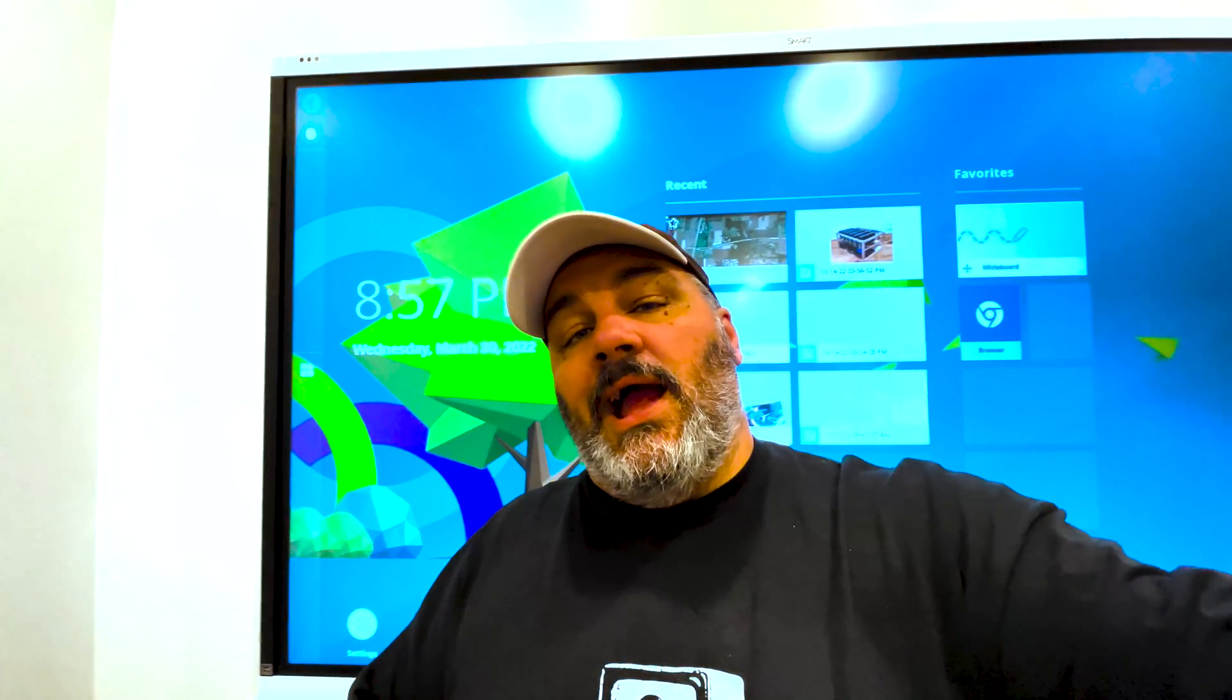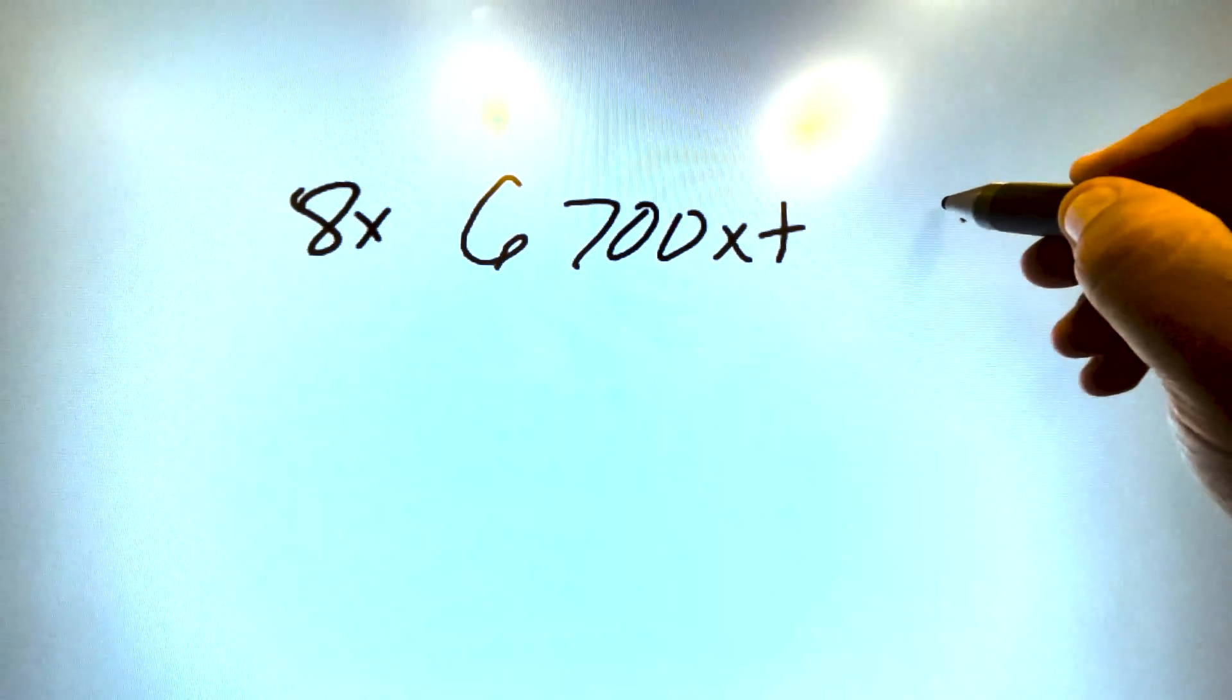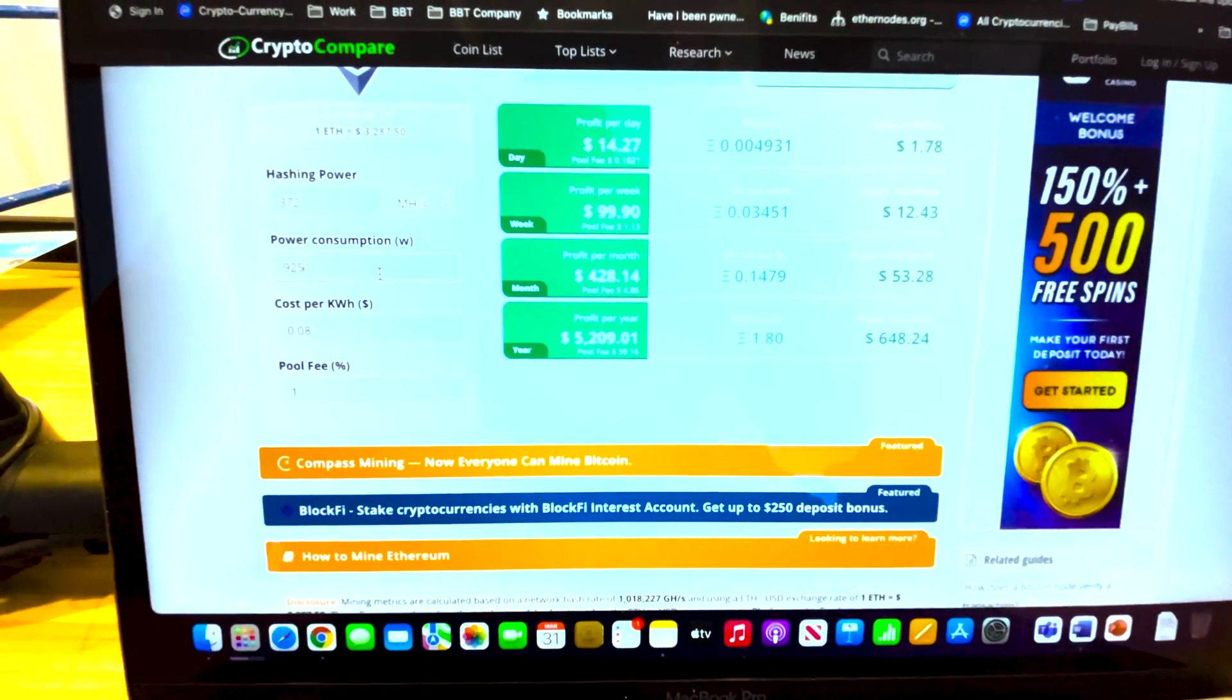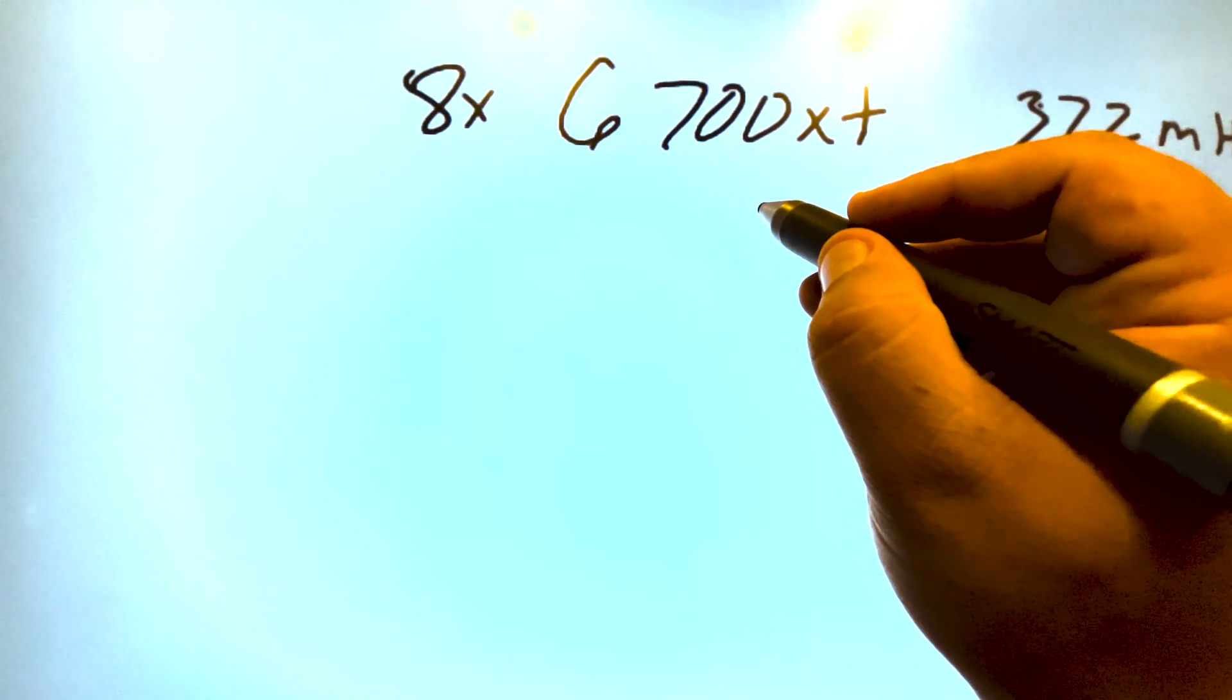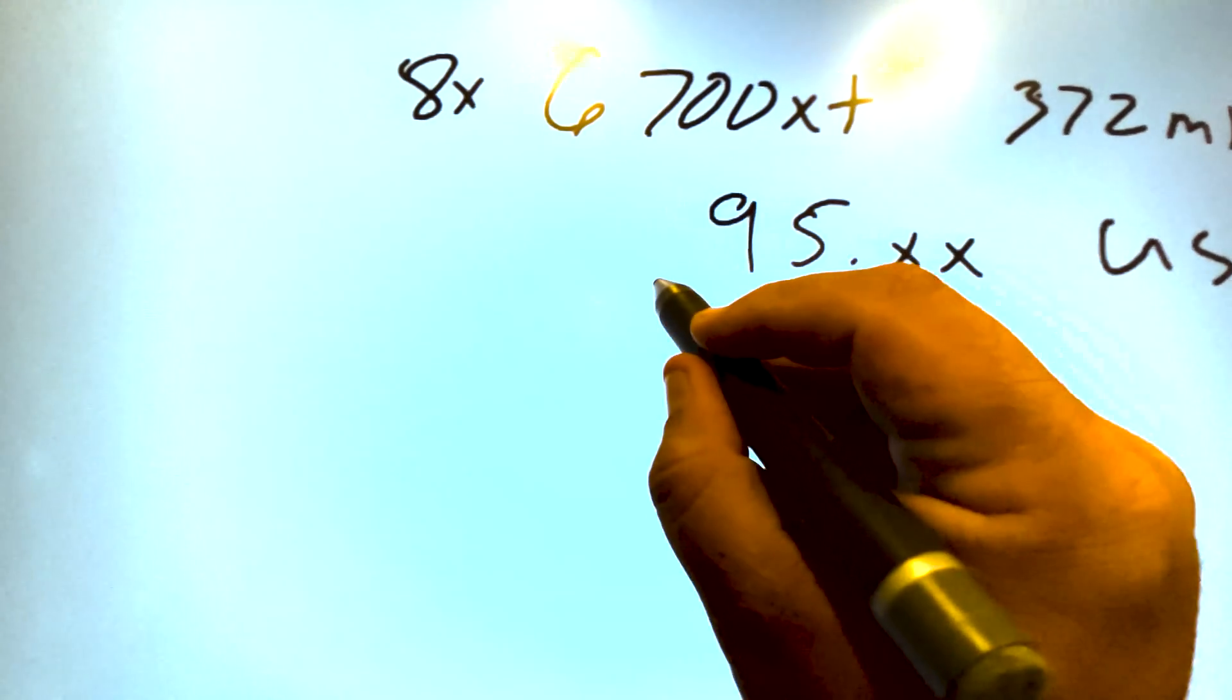Let's jump on the whiteboard and look at what we're talking about. If we look at an eight-card 6700 XT rig as an example, that's about 372 mega hash for that whole unit. The figures we're looking at were from 372 at current rate, about 925 watts of power. You're looking at right around 90 to 99 dollars a week in profit right now. Let's just call it roughly 95, we'll split the difference of USD that that kind of machine would make.